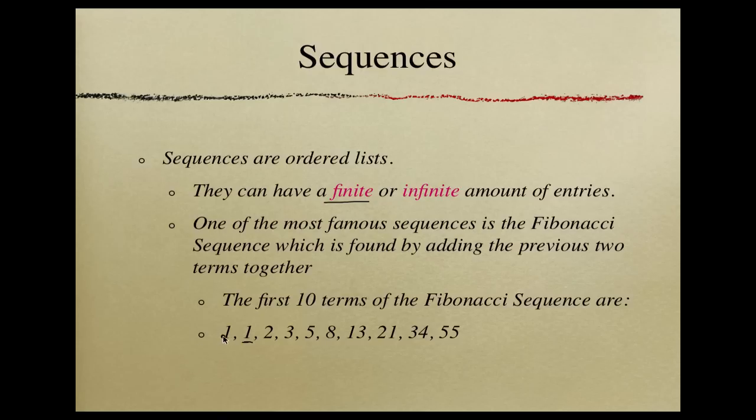1 plus 1 is 2. 2 plus 1 is 3. 3 plus 2 is 5. 5 plus 3 is 8. 8 plus 5 is 13. So on and so forth. And this sequence goes on forever. It is an infinite sequence. But that's how you actually determine the terms of the Fibonacci Sequence.